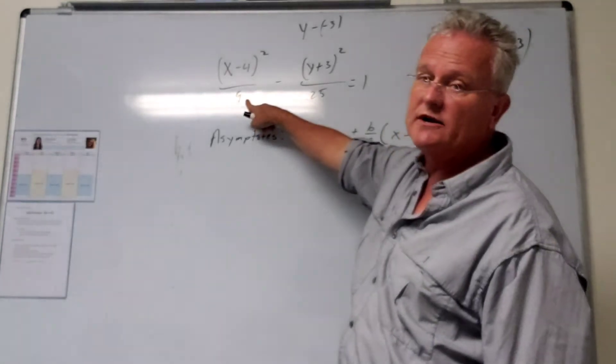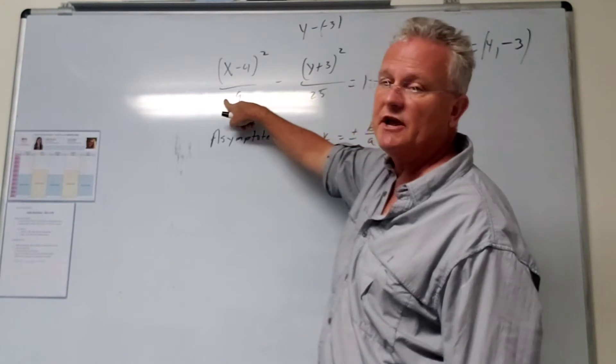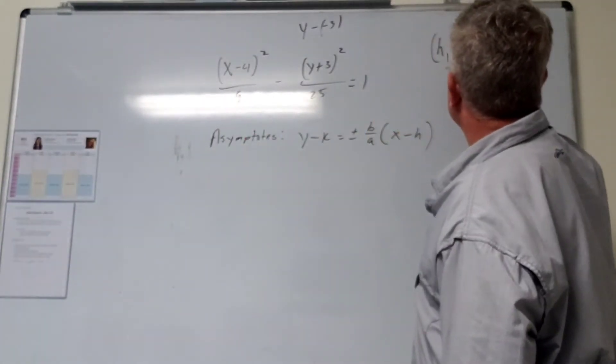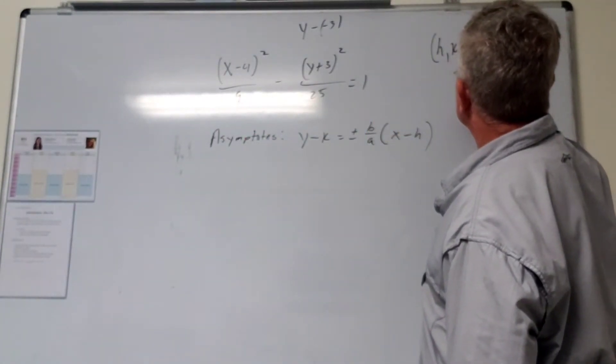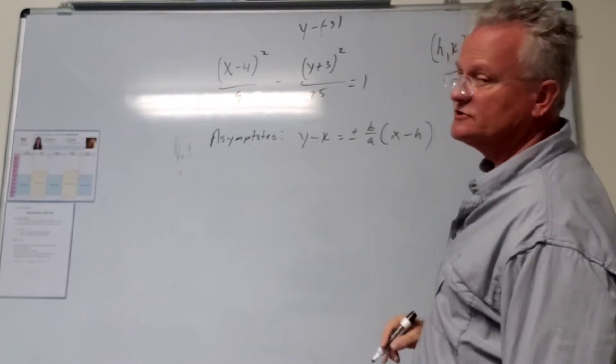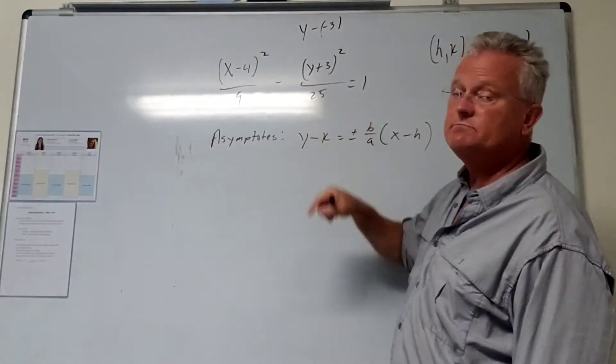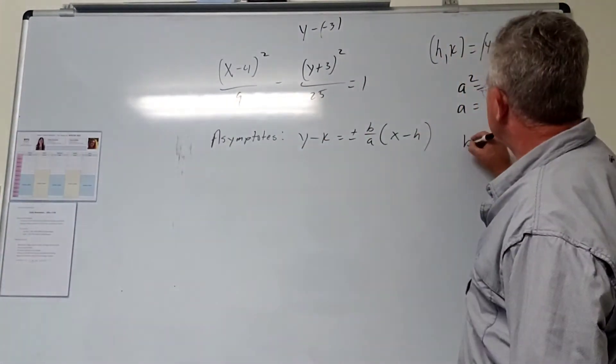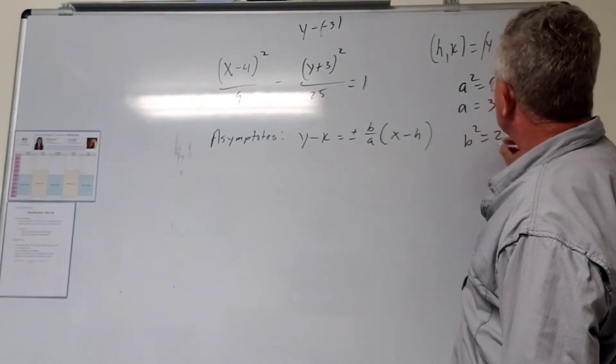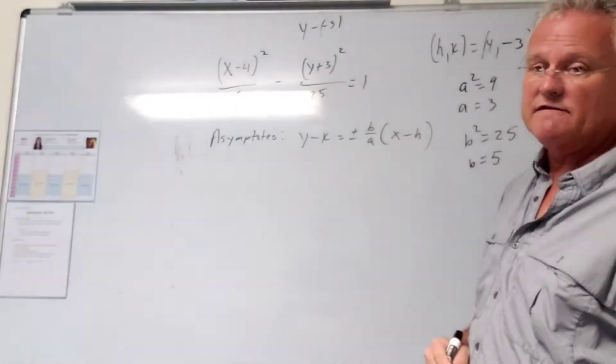a squared is the number in the first denominator, so a squared is 9, which means a is 3. Likewise, b squared is 25, and the square root of 25 is 5, so b is 5.